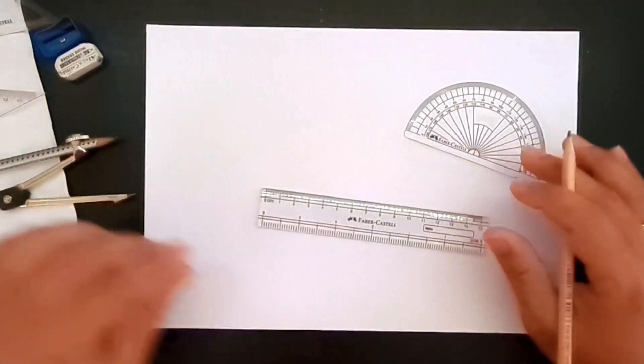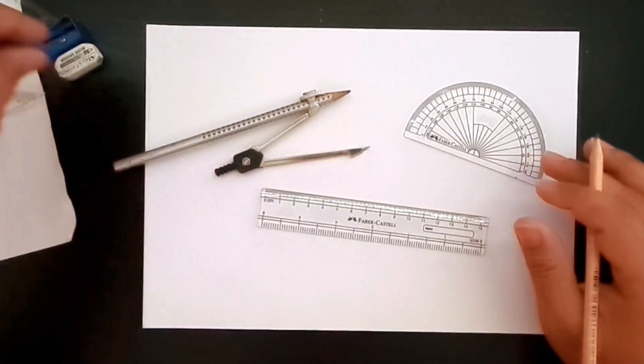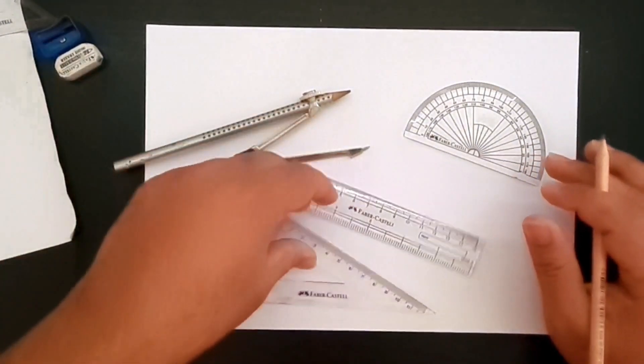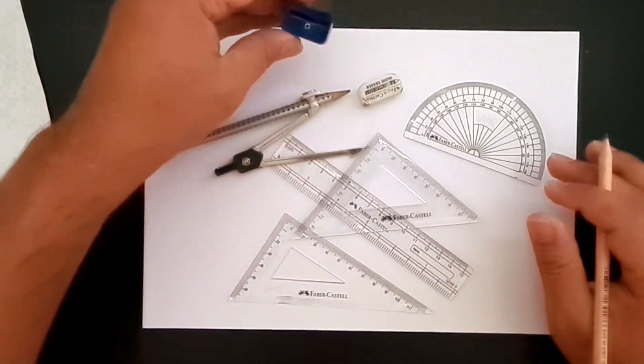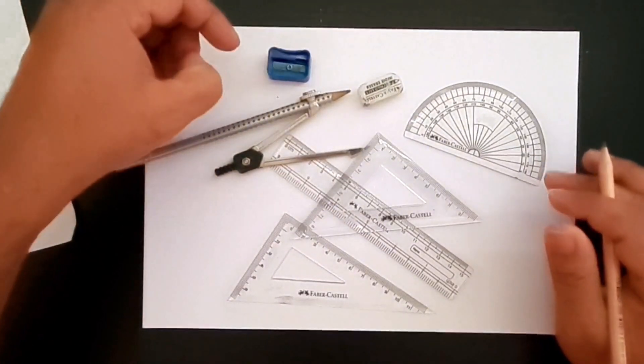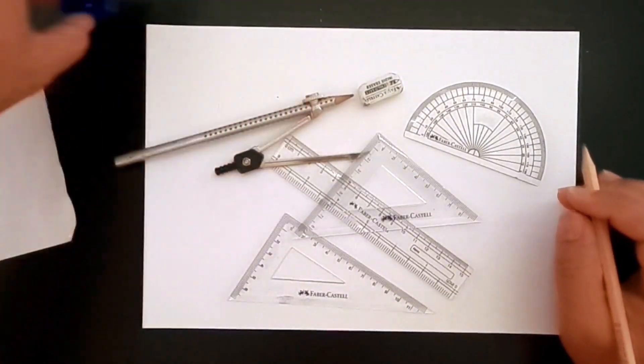A protractor, your compass, and set squares. You might need an eraser or a rubber and your sharpener. So let's make a start.